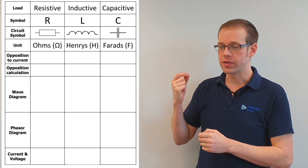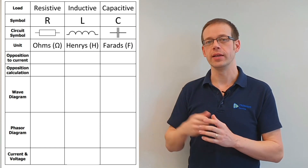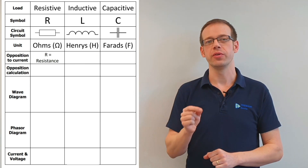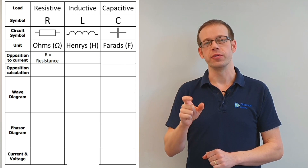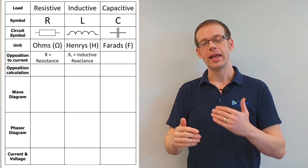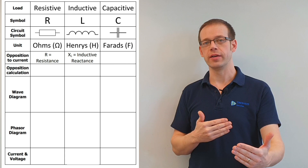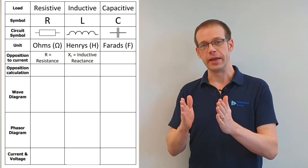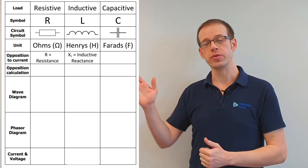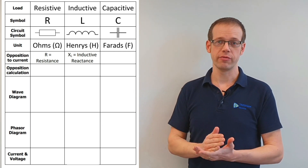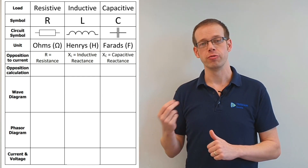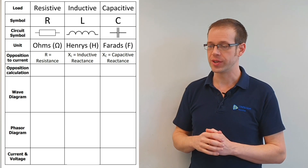We then looked at the different types of opposition to current that these three loads represent. A resistive load presents resistance. An inductive load produces a new kind of opposition to current flow that we call inductive reactance. Please go back and watch the earlier videos in this playlist to understand what inductive reactance means and where it comes from. Capacitive loads produce yet another kind of opposition to current flow called capacitive reactance. All three of these are measured in ohms.